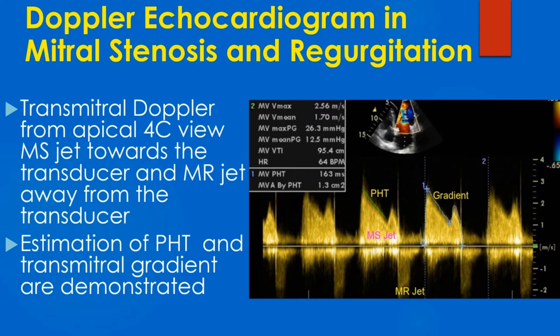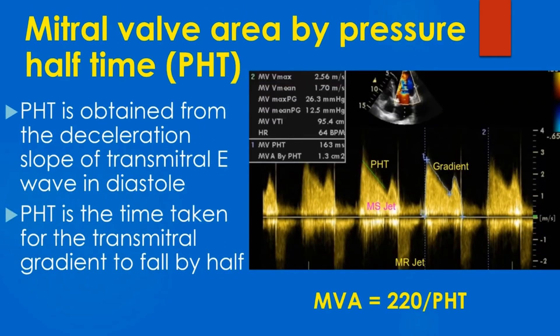Estimation of pressure half-time and transmitral gradient are demonstrated. Mitral valve area can be estimated from the pressure half-time of the transmitral gradient. Pressure half-time (PHT) is obtained from the deceleration slope of the transmitral E wave in diastole.